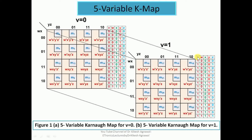Similarly, for the V=1 map, the variable V is fixed to one for all min terms, while W, X, Y, Z vary from all zeros to all ones. For the five-variable K-map, W and X correspond to row variables and Y and Z correspond to column variables. Both W, X and Y, Z variables are arranged in Gray code. We have 16 min terms in the V=0 map and another 16 min terms in the V=1 map.